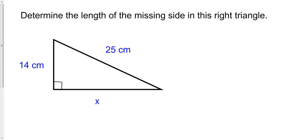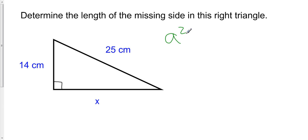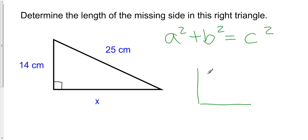In this video I'm going to talk about how to find the missing length in a right triangle when it's the leg of the triangle that's missing, rather than the hypotenuse, and we're going to use the Pythagorean theorem. The Pythagorean theorem, just as a reminder, is a squared plus b squared equals c squared in a right triangle. We have the triangle labeled ABC where c is the hypotenuse.